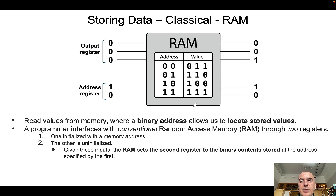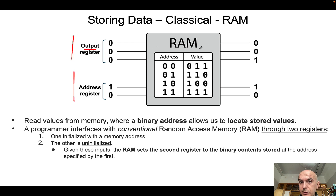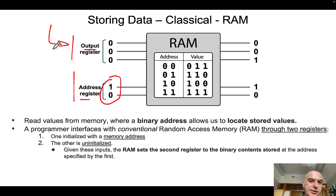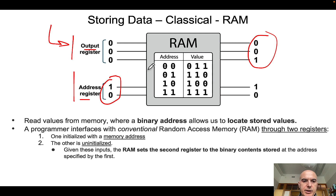So how does classical RAM work and how can we store and retrieve data using it? Well, in classical RAM we have two registers: the output register that is not initialized, and the address register that contains the location where we have the values that we want to retrieve. We read values from a memory where a binary address allows us to locate the stored values. In the example we see in these slides, we have the address register that is 10, and then our RAM allows us to retrieve the value connected to this address, which in this case would be 100.